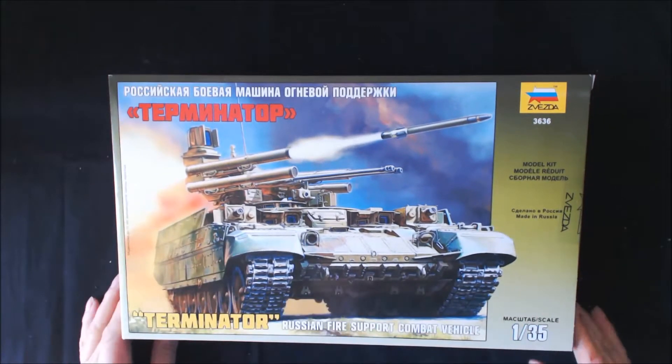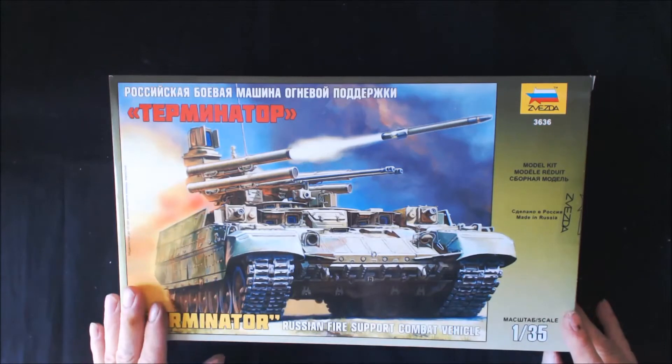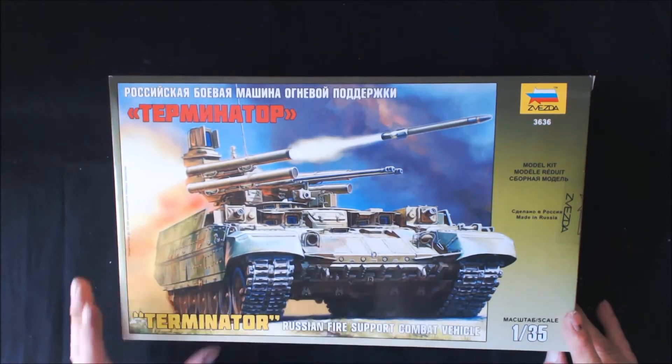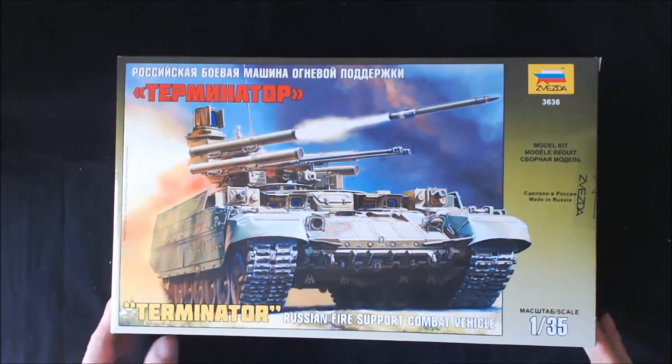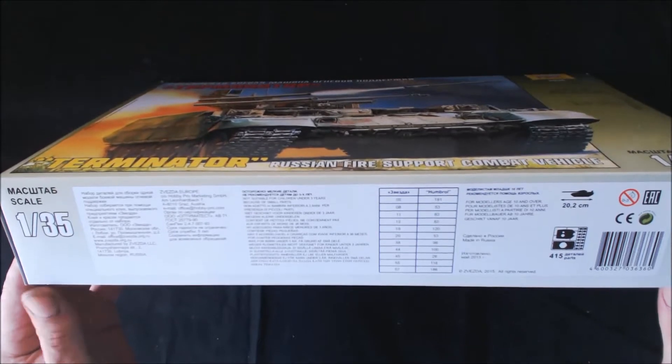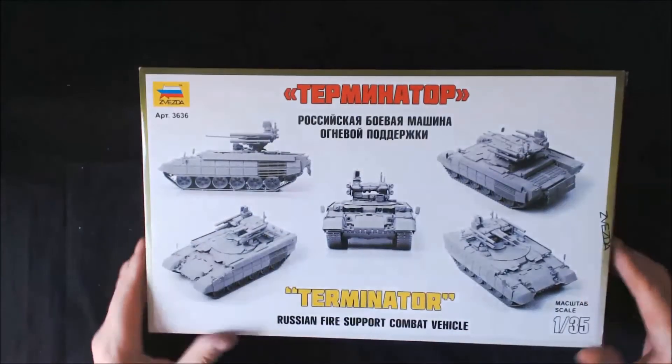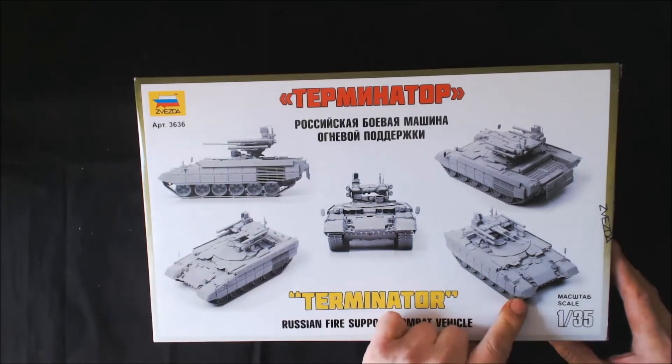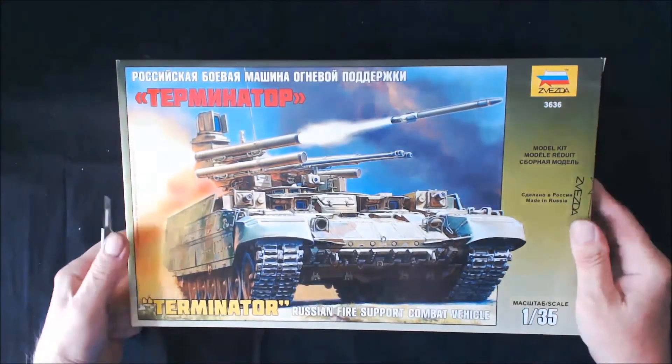I purchased this offline on eBay at an extortionate price of 16 quid, very cheap. The box art is quite nice, all in Russian which I can't read, but I can read there's 415 parts which is quite a lot. On the back we have photographs of the actual vehicle assembled which looks pretty cool. I have not broken the seals on this, so I've not even looked at it myself.